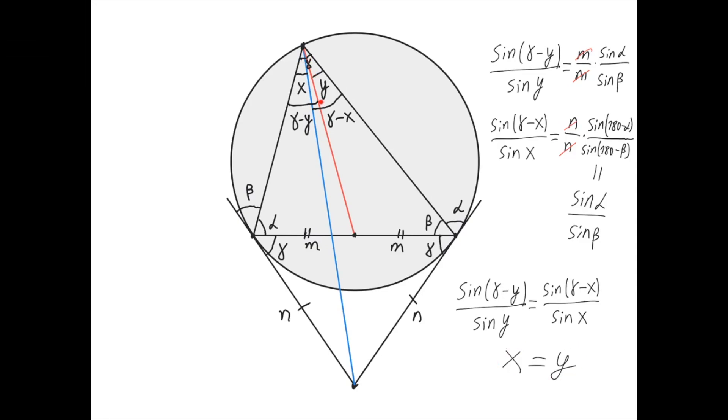This means that the median and the symmedian in a triangle are always isogonal lines with respect to this angle.